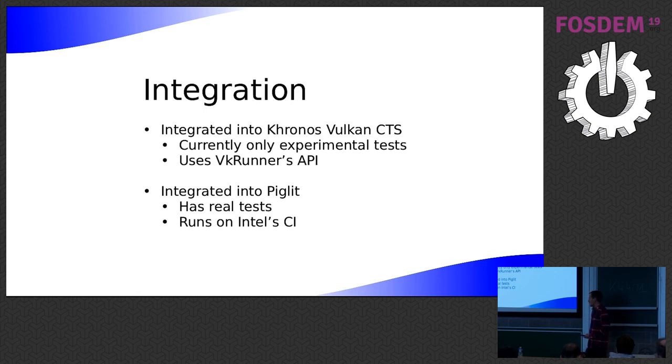So it's also integrated into Piglet. So Piglet has actual tests, real tests on it now, and it gets picked up by Intel's CI system. So if you write some Vulcan features and you want to make sure they don't get regressed, the best way I think at the moment is to write, if it's a shader test, then write it as a VK runner test, and just drop it into the Piglet repo. And if you just drop it anywhere under a certain directory, it should get picked up. So hopefully there's a really minimal barrier to adding shader tests for Vulcan.